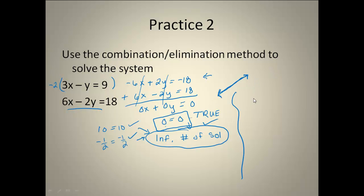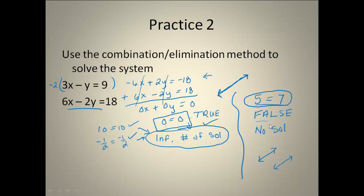Sometimes you're going to go through and do the work and end up getting something like 5 equals 7. Similar — because I have no variables — but the problem is that this statement is always false. I'm never going to get 5 to equal 7. So when it's a false statement, instead of an infinite number of solutions, it's actually no solution. What we have would be two parallel lines that don't ever touch. So if you end up with a statement that has no variables in it and is false, it's no solution. If you end up with a statement that is true and has no variables in it, then it's an infinite number of solutions. Those are the two special cases we run into once in a while. Most of the time you're going to have an ordered pair for an answer, but there are occasions where we can end up with either of these two situations.